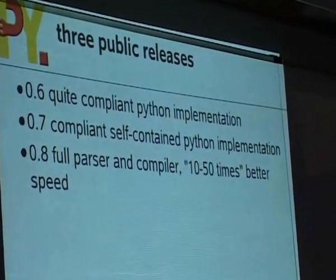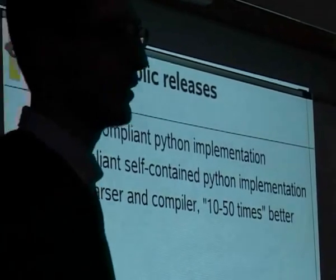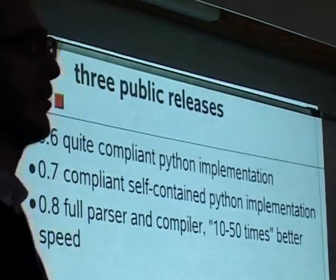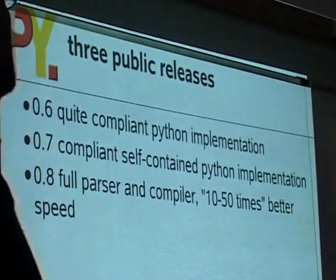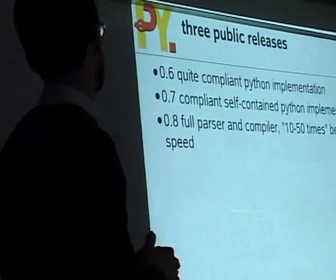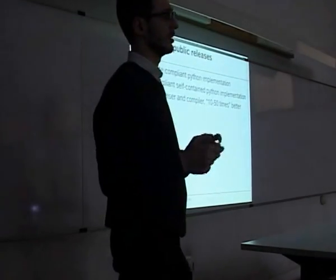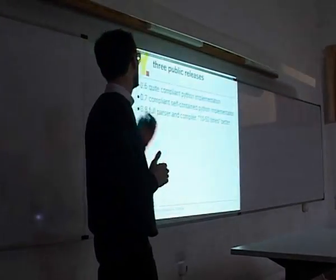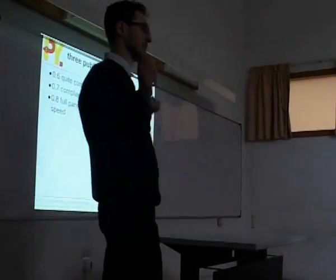The first release was 0.6, which was mostly about releasing the interpreter — it could already pass some of the CPython standard library tests and could only run on top of CPython. Then we had 0.7, with quite a bit of work to finish re-implementing missing things, making PyPy more compliant and enabling us to take this Python code and translate PyPy using CPython.